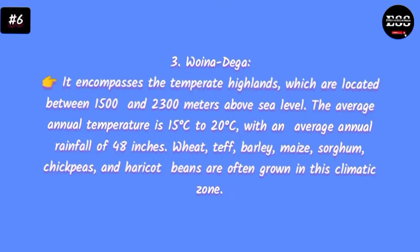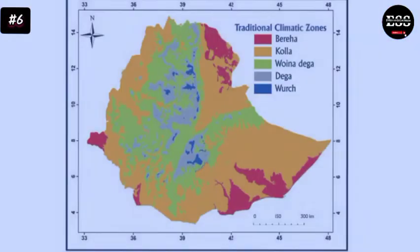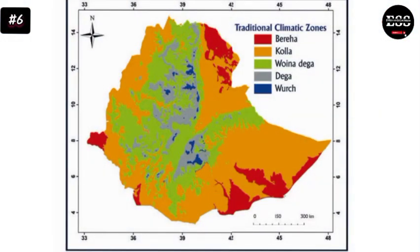The third zone encompasses the temperate highlands, referred to as Weyna Dega, which are located between 1500 and 2300 meters above sea level. The average annual temperature is 10 to 20 degrees centigrade with an average annual rainfall of 48 inches. Common crops include wheat, barley, maize, sorghum, and chickpeas.